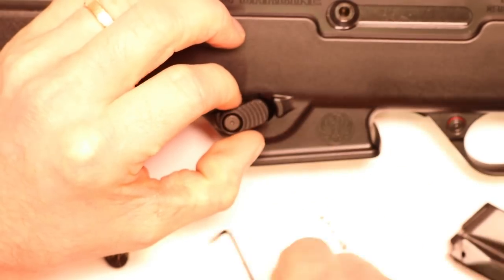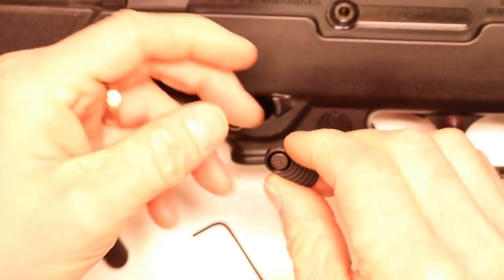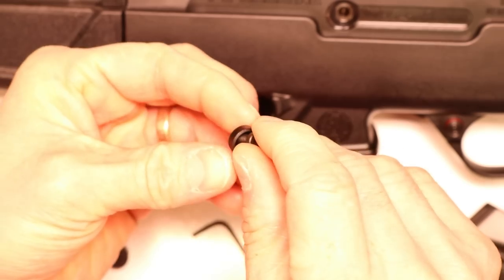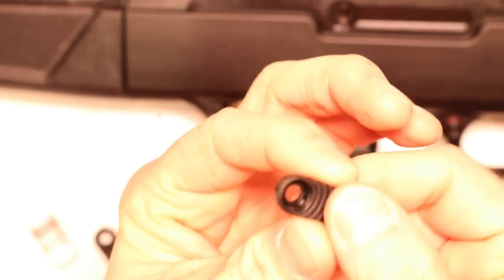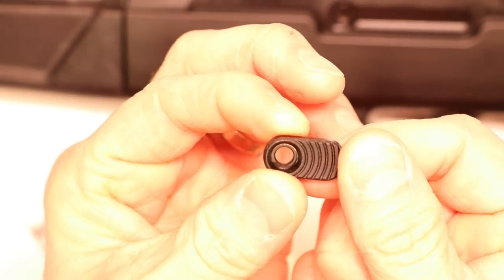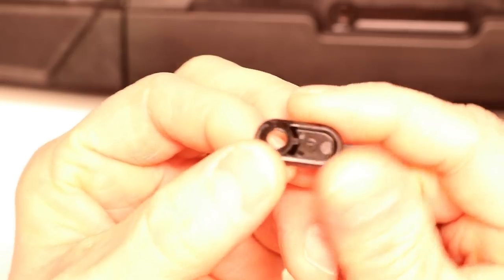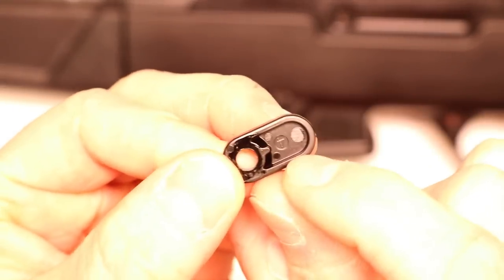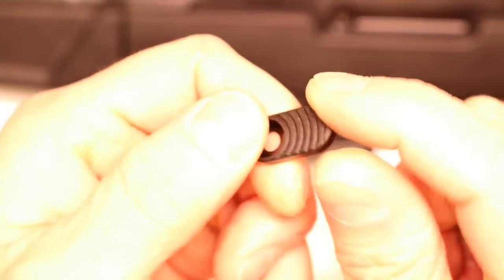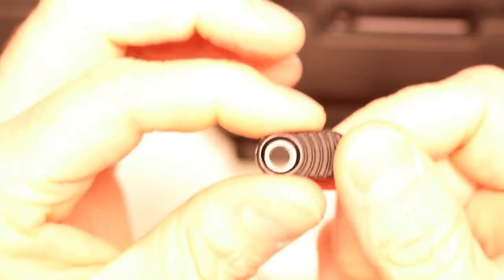So the one and a half millimeter allen key is all we need here to loosen up that screw. Comes right out. And there's your factory mag release right there. Plastic, cheap. You can see it's just a little injection molded part. Yeah, it's worth upgrading.